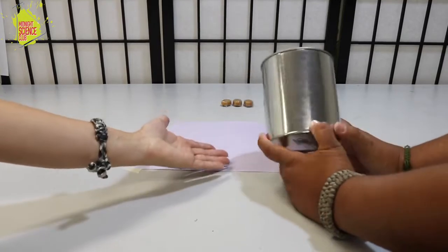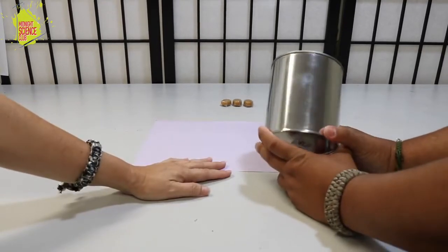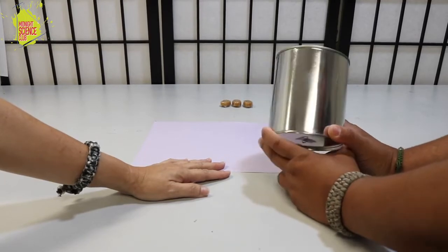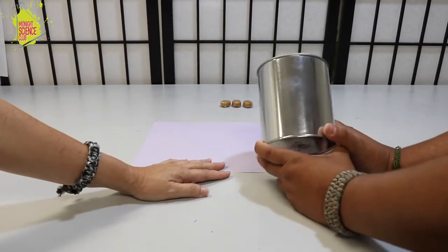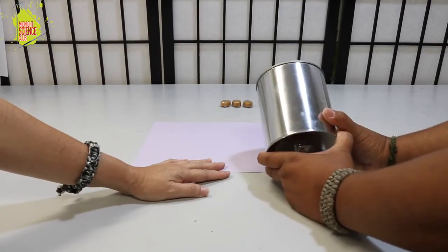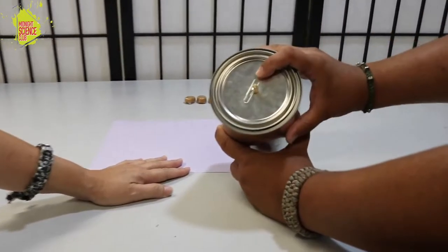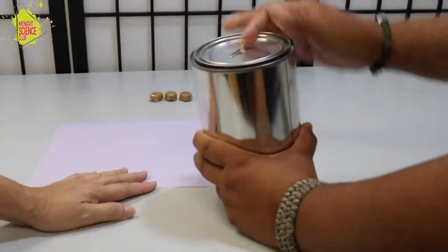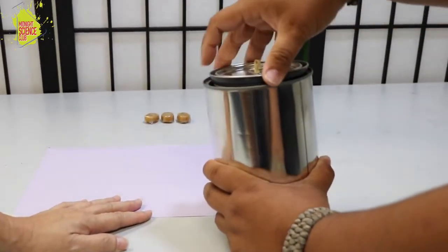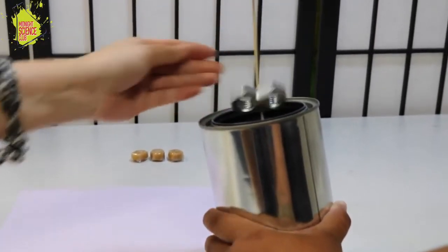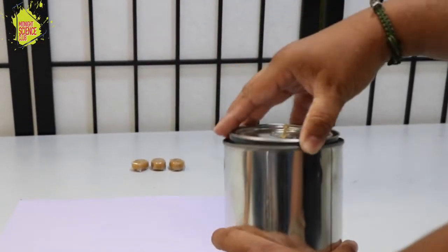All right. So this is a quart paint can. If you have an empty one at your house go ahead and ask permission to use it for an activity. You can absolutely recycle these or you can find an empty one like this at your hardware store in their paint department. The other thing we've got is a couple paper clips. One on the top, one on the bottom, we've got some rubber bands. And on the inside here, we've got some very large hex nuts. And that's the magic. That's how this works.